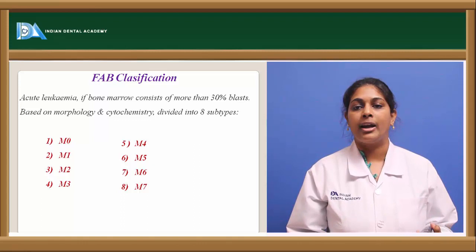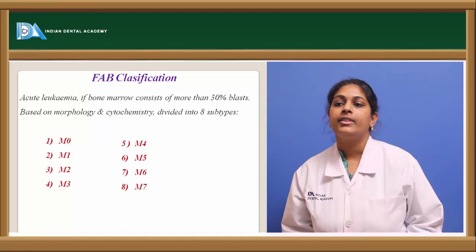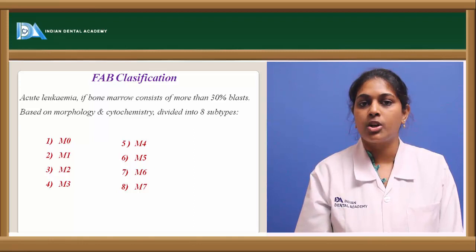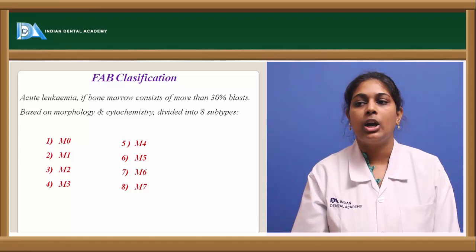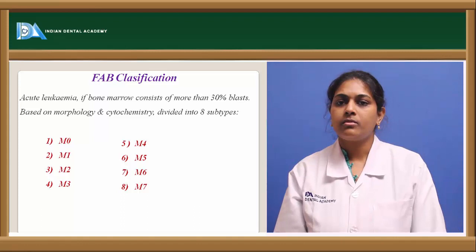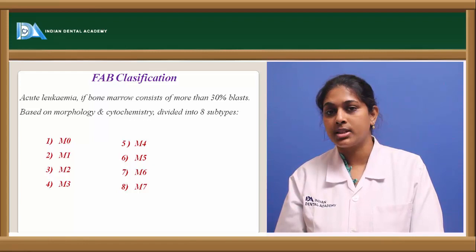M3 is acute promyelocytic leukemia, constituting 5% of all AMLs. It is characterized by hypergranular promyelocytes along with multiple Auer rods per cell. It stains myeloperoxidase-positive at a grade of plus 2.